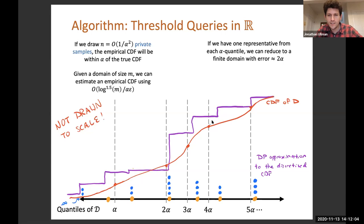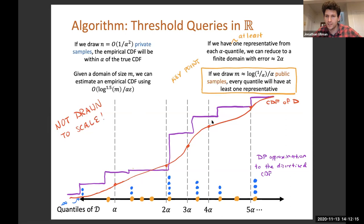The thing I haven't told you is where the orange points come from. But maybe it's not surprising, given how the talk has been going, that these orange points can be the public samples. The important fact is that if I draw just a little more than 1 over alpha samples from the distribution that are public, then I will have at least one orange point inside every alpha quantile. I can prove that by what's called a coupon collector argument. I may have more orange points inside some quantile, but that actually only helps. I'm going to use my public samples to generate a domain over which I can compute a CDF using the private samples.